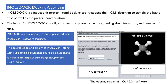The inputs required for protein-ligand docking in IMALS DOG are the ligand structure, protein structure, binding site information, and the number of runs, which is the number of structures to be generated. IMALS DOG is packaged inside the MLS 2.0.1 software package and can be downloaded from the web address shown here, along with the opening screen of the software.